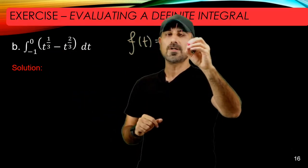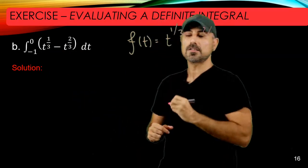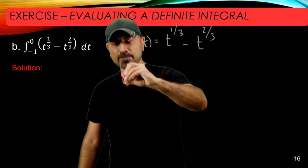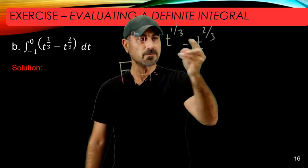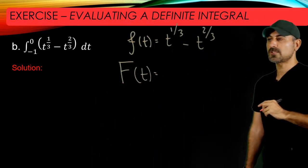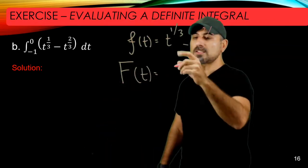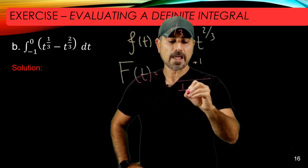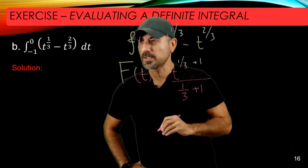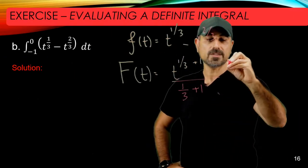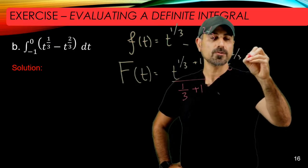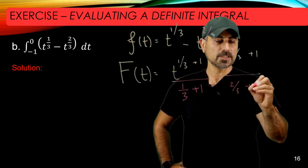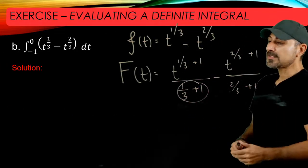Let's find capital F, which is the anti-derivative of the difference of two exponential terms. This one has the integral t to the 1/3 plus 1 divided by 1/3 plus 1, and the next one is t to the 2/3 plus 1 divided by 2/3 plus 1.